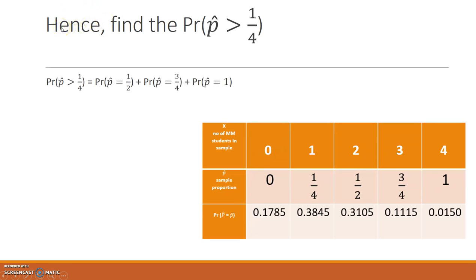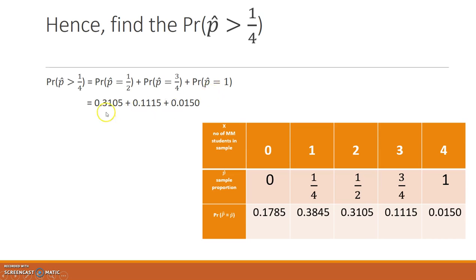Now we need to find the probability that P-hat is greater than 1/4. Looking at our table, the values where P-hat is greater than 1/4 are P-hat = 1/2, P-hat = 3/4, and P-hat = 1. So P(P-hat > 1/4) = P(P-hat = 1/2) + P(P-hat = 3/4) + P(P-hat = 1) = 0.3105 + 0.1115 + 0.0150 = 0.4370.